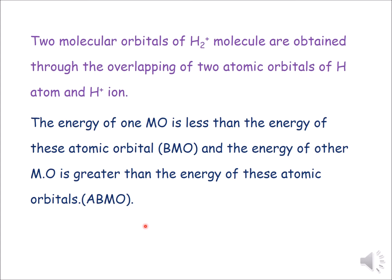In the case of H2+, one atomic orbital is from hydrogen and one from the hydrogen ion H+. When they overlap, two molecular orbitals form. One is of lower energy than the respective atomic orbitals — this is called the bonding molecular orbital. The other is called the anti-bonding molecular orbital, and its energy is higher than the energy of the H orbital and H+ ion.